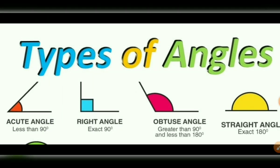Types of angle summary: acute angle means less than 90 degrees, right angle means exactly 90 degrees, obtuse angle means greater than 90 degrees and less than 180 degrees, straight angle means exactly 180 degrees.